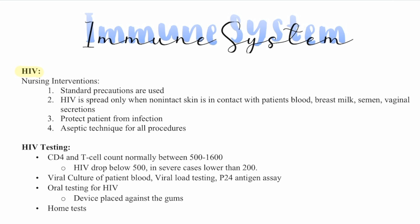For HIV testing, we look at CD4 and T cell count, which is normally between 500 and 1600. In HIV, it will drop below 500 and in some cases lower than 200. We may do a viral culture of the patient's blood, looking at viral load testing and P24 antigen assay. We also have an oral testing device placed against the gums, and a home test.